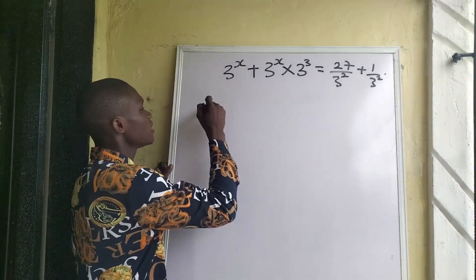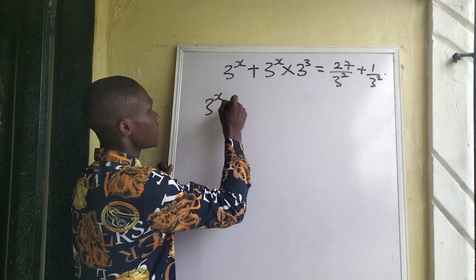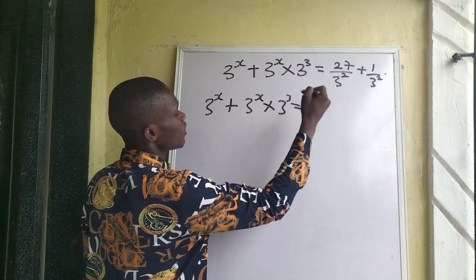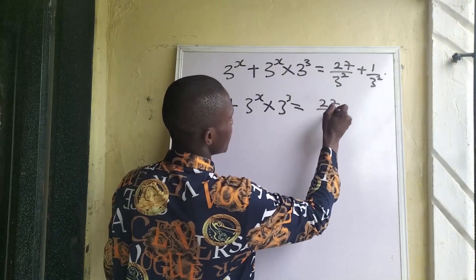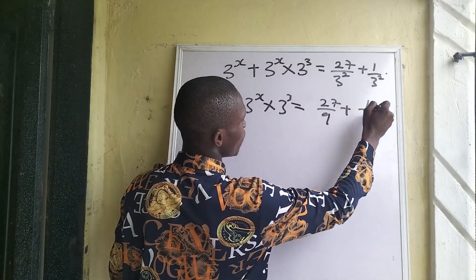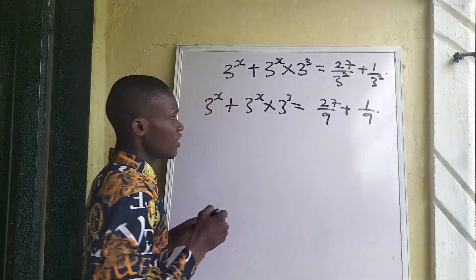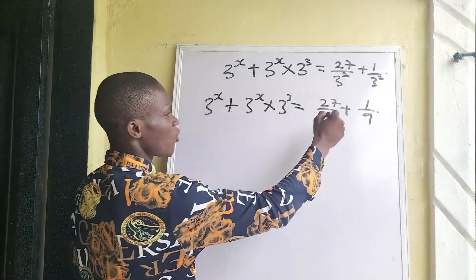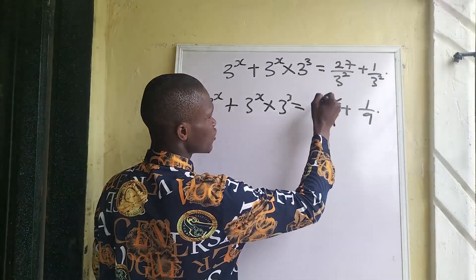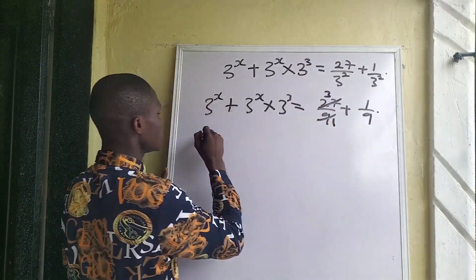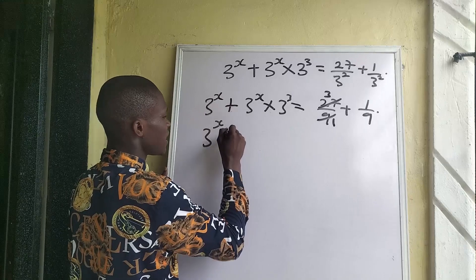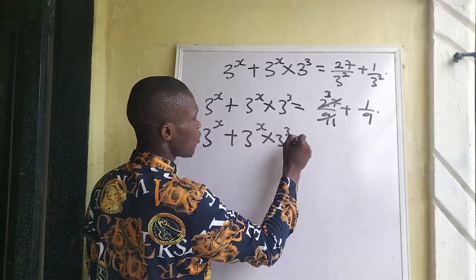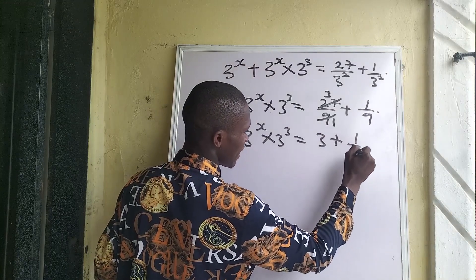We can simplify: 9 into 27 gives 3. So we are left with 3 to the power of x plus 3 to the power of x times 3 to the power of 3, equal to 3 plus 1 over 9.